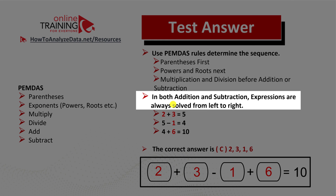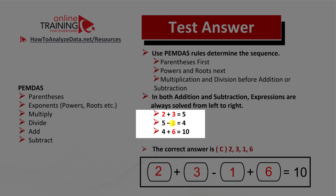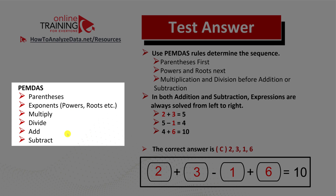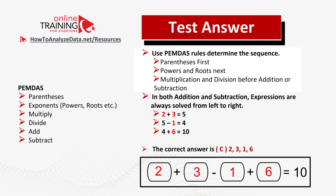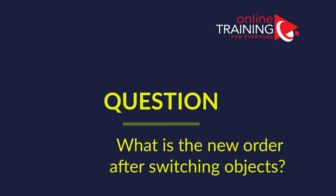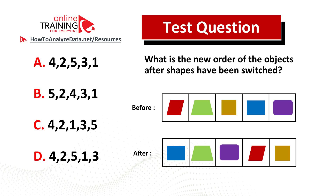Since we only have addition and subtraction, we can solve this expression by doing calculations from left to right. The correct choice is choice C: two three one six. When we add two and three we get five, five minus one equals four, and four plus six equals ten. In more complex expressions you may need to use the PEMDAS rule — parentheses first, then powers and roots, then multiplications and divisions before addition and subtraction.